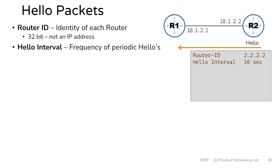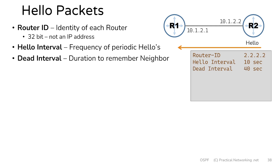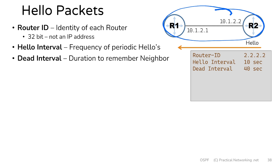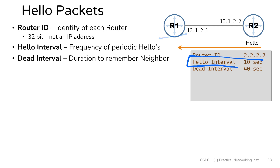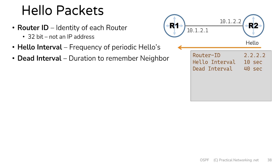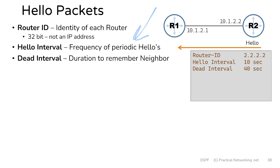Closely related to the hello interval is the dead interval timer. The dead interval is a duration that a router is going to remember information about a neighbor if it no longer hears from that neighbor. After router 1 and router 2 become full neighbors, router 1 is going to be expecting to see a hello packet from router 2 every 10 seconds. If 40 seconds passes without hearing a hello packet from router 2, router 1 will forget everything that router 2 ever told them and will assume that router 2 is no longer available in the topology. These periodic hellos serve as a health check for the router.